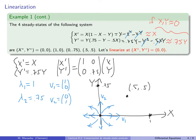The next step is to do the same linearization at the other steady states. It's slightly more complicated because you can't just plug in (0,0) — you need a change of variables that shifts the origin to the steady state. We'll do that next.